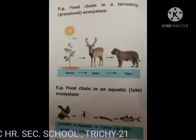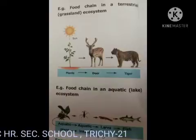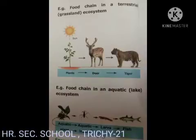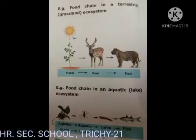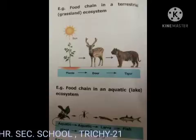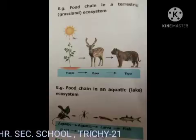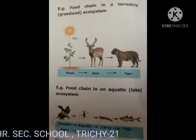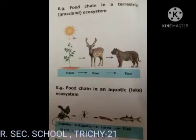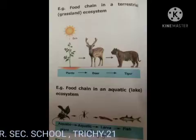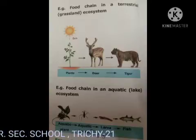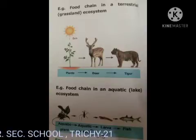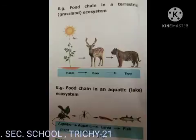Example of a food chain in a terrestrial ecosystem, i.e. a grassland ecosystem: the plant is eaten by deer, and the deer is eaten by a tiger.